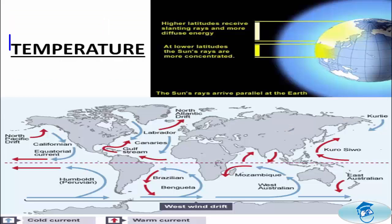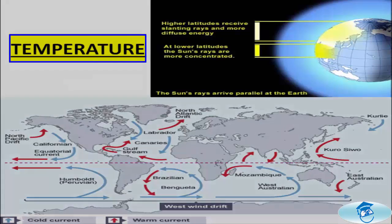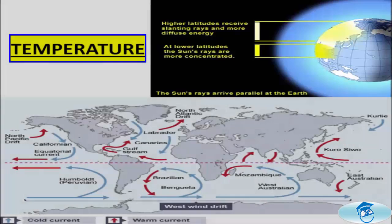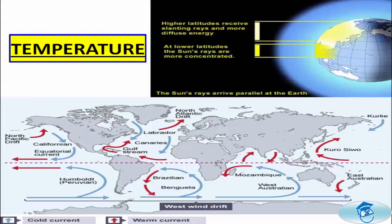The second factor is temperature. The oceans near the tropics and equator are much warmer than the ocean water in the polar or temperate regions. Therefore, warm equatorial waters move towards the poles as warm currents, while cold ocean currents move towards the equator.